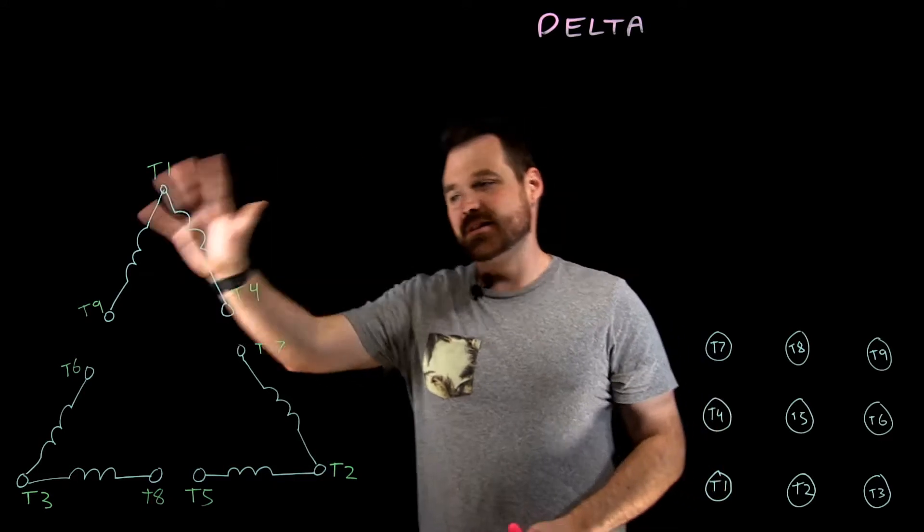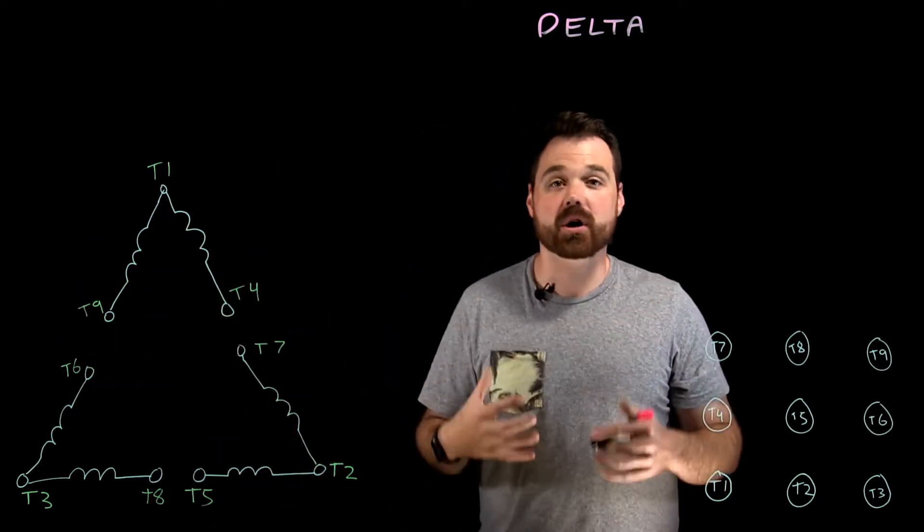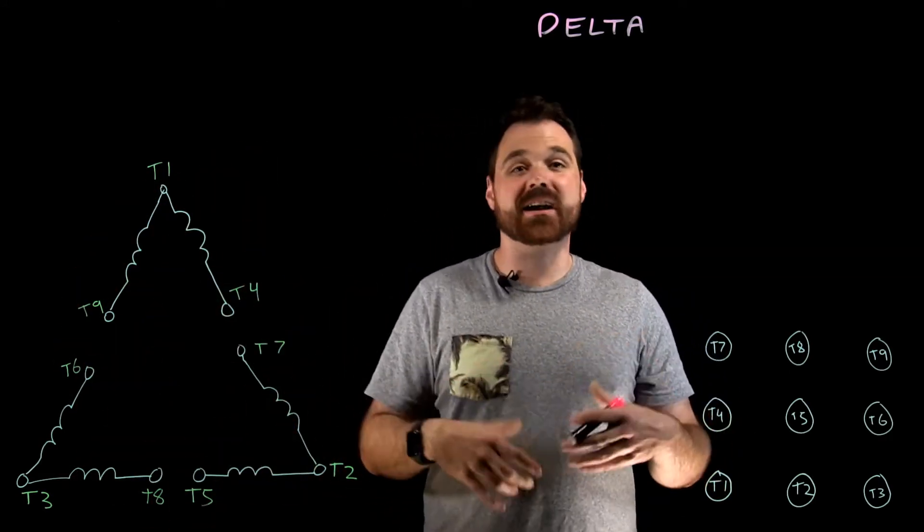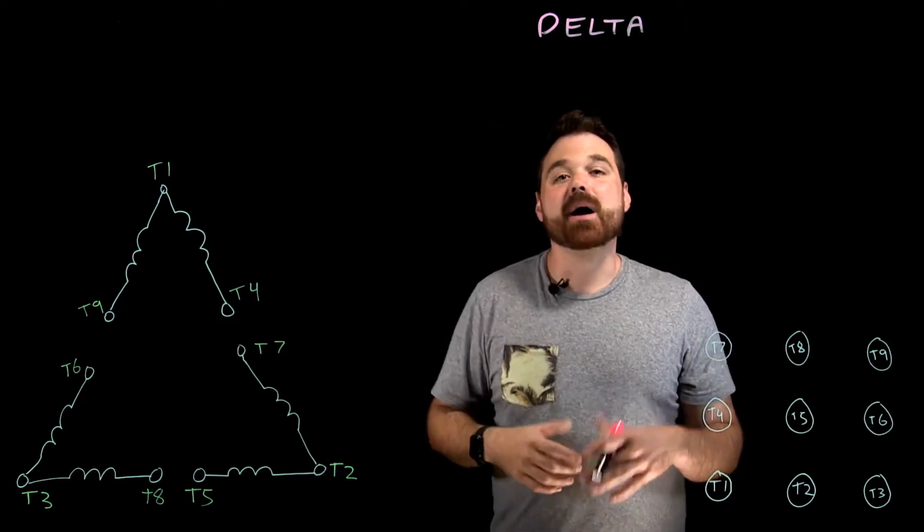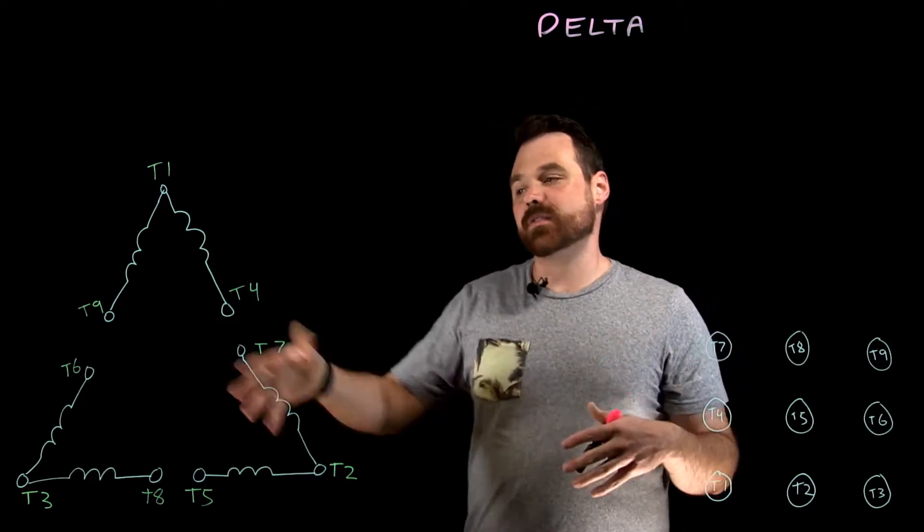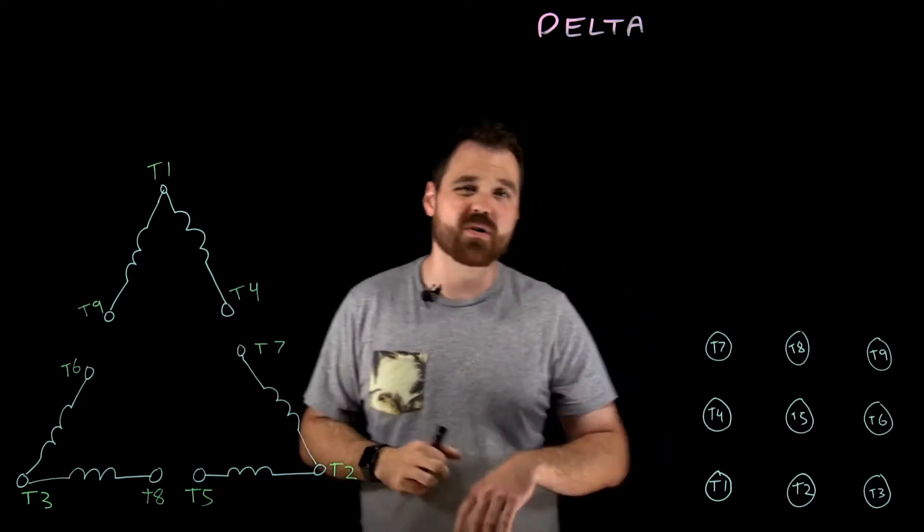So we have here our Delta connections. And we can check out our terminal identification in another video. So in order to get these terminals, we have all these terminals. We buy this Delta motor.